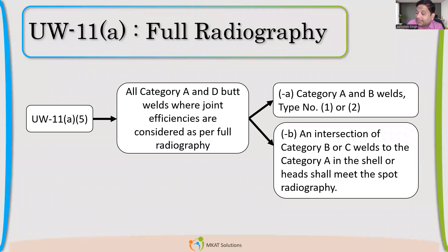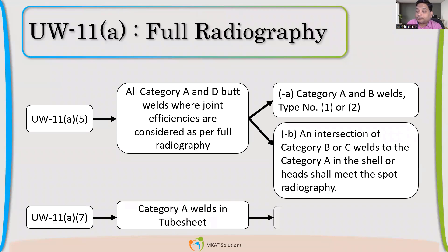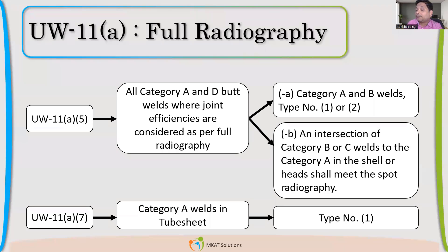In one point where you have Category B and C — Category B is the circumferential seam — if the circumferential seam is intersecting with Category A, then you can do spot radiography for that joint. That is permitted; you don't have to do full radiography, full radiography does not become mandatory. If you have a tube sheet and there is a Category A weld, like if it is made from joints, then you need to have a Type 1 joint only and you have to do full radiography for that joint. Then only it will qualify.